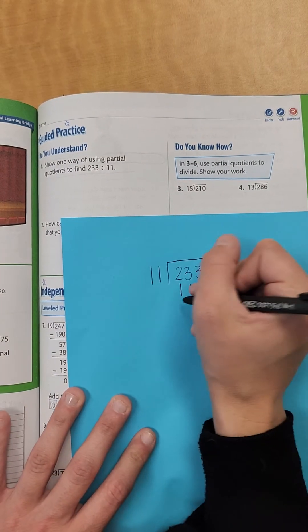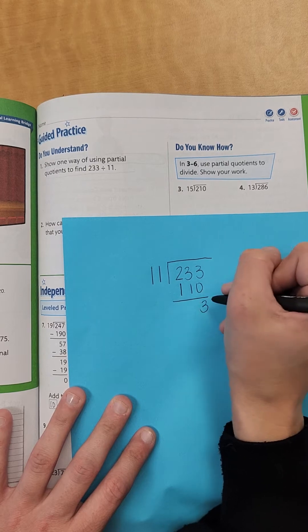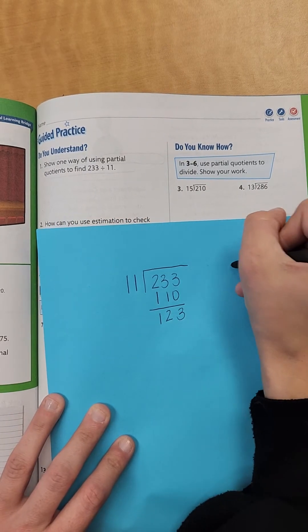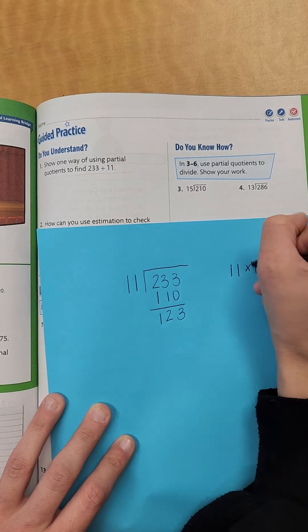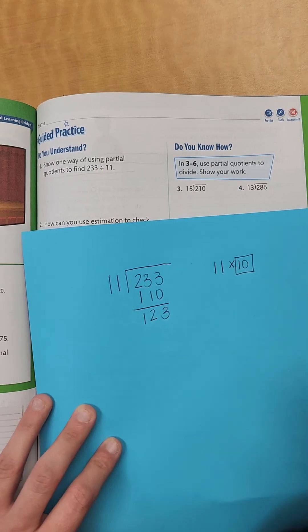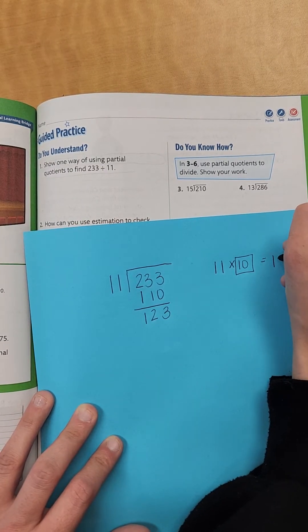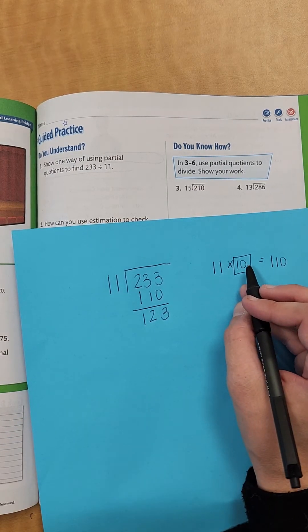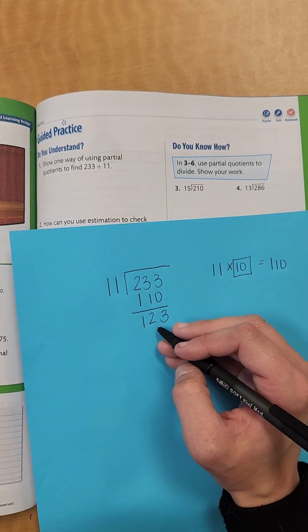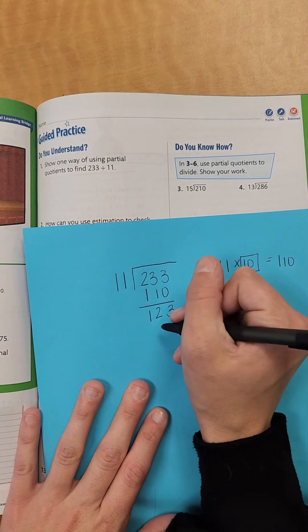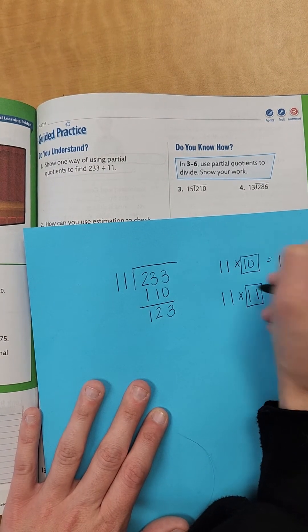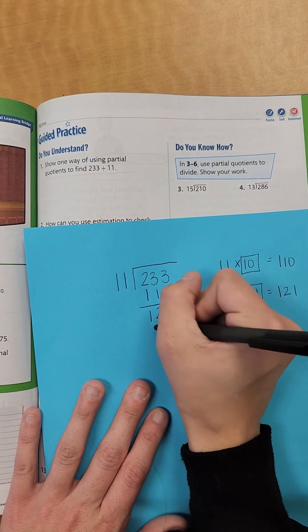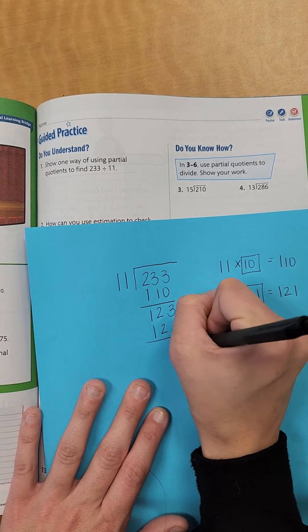So I know that 11 times 10 is 110. So then I'm going to subtract that 3, 2, 1. So now over here to the side I have 11 times 10, 10 is the number that we needed to find the product, which gives us 110, so 10 is the number that I'm adding up at the end. Now, 11 will go into 123, I know that that will go into it 11 times. So 11 times 11 equals 121. So 121 subtracted, I'm left with 2.